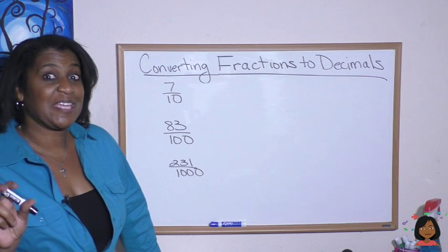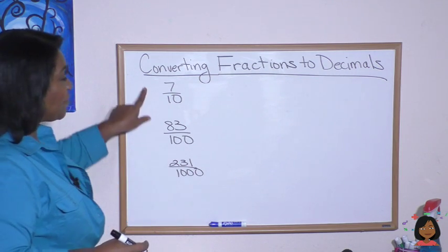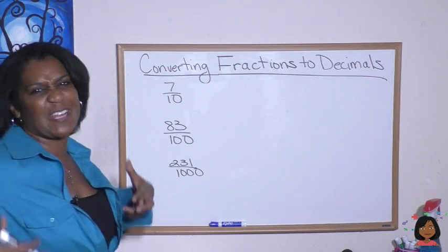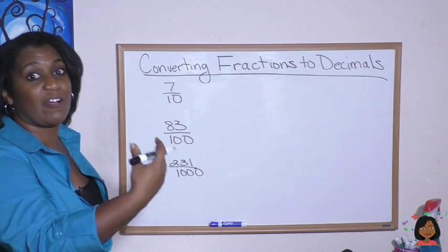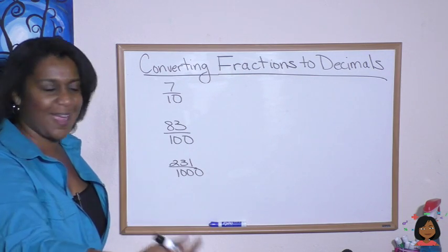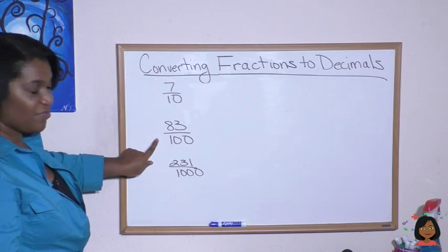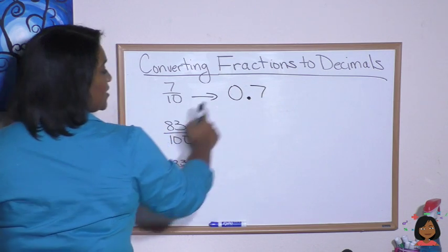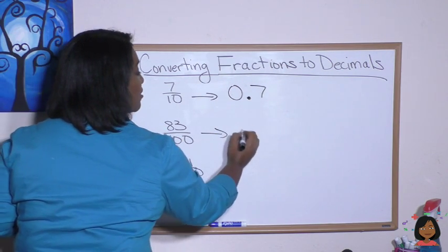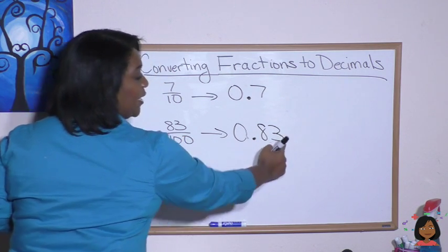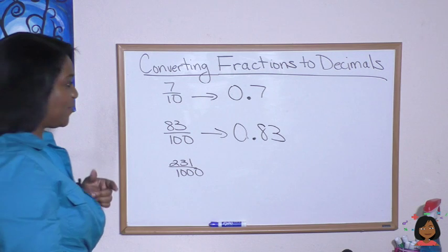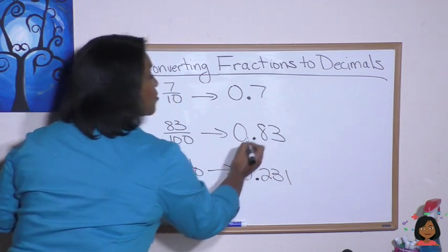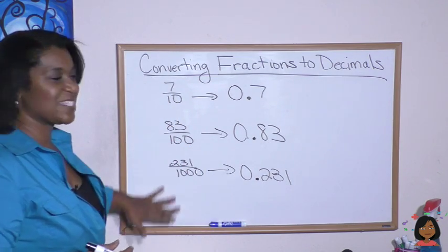Let's take a look at some of the easier fractions-to-decimal problems. Whenever you see a fraction that is over something that ends in a zero, it's already primed to go to a decimal, because we know our decimals are in the tenths, hundredths, and thousandths. So quite simply, as a decimal, we know this is 0.7 tenths. We know 83 hundredths is 0.83, and 231 thousandths is 0.231. Some problems we don't have to actually do the division — it's already set up nicely for us.